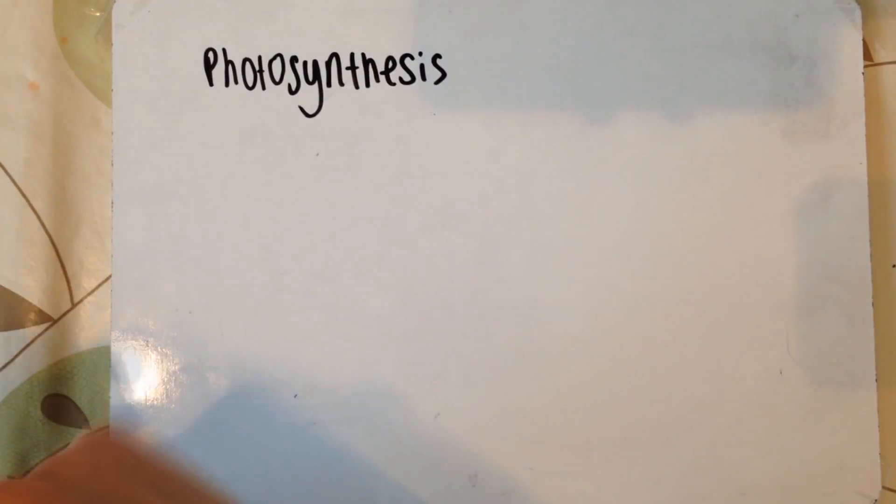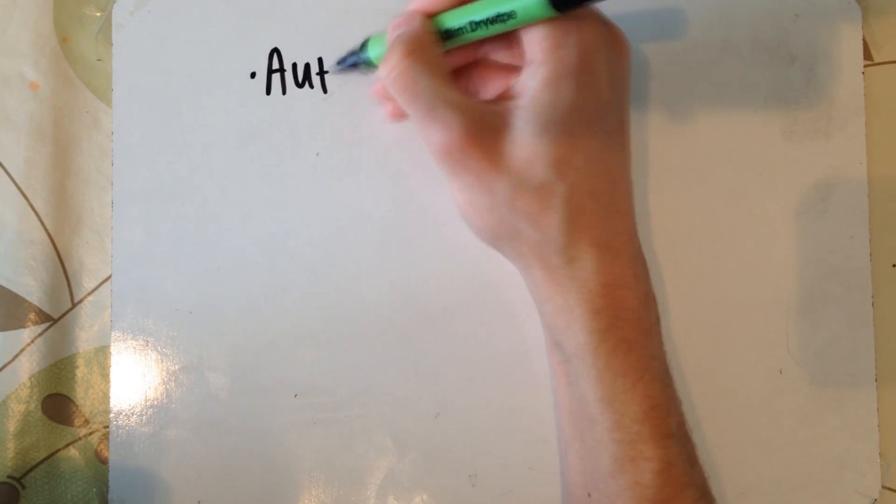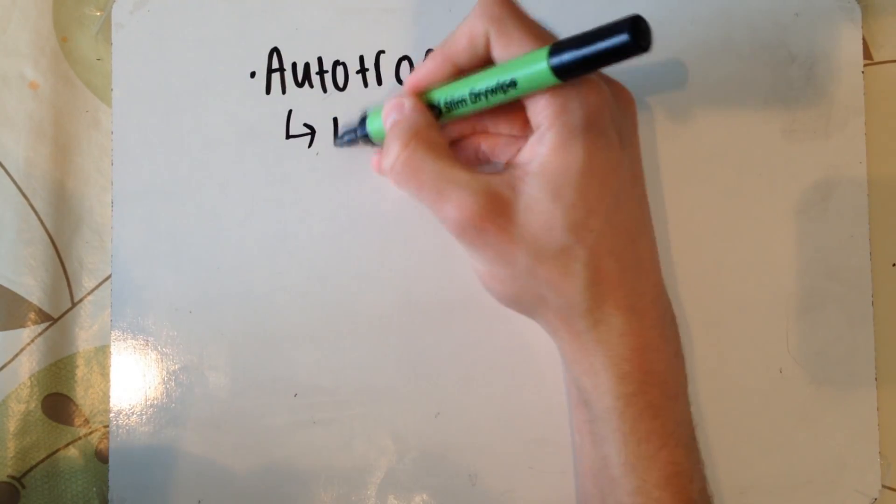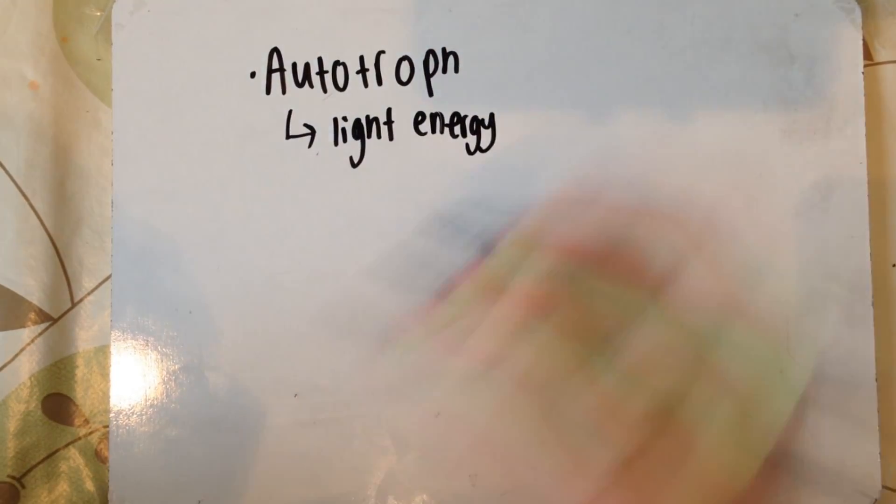In this video we're going to talk about photosynthesis. First up, the specification dictates that we must know how to define the terms autotroph and heterotroph.